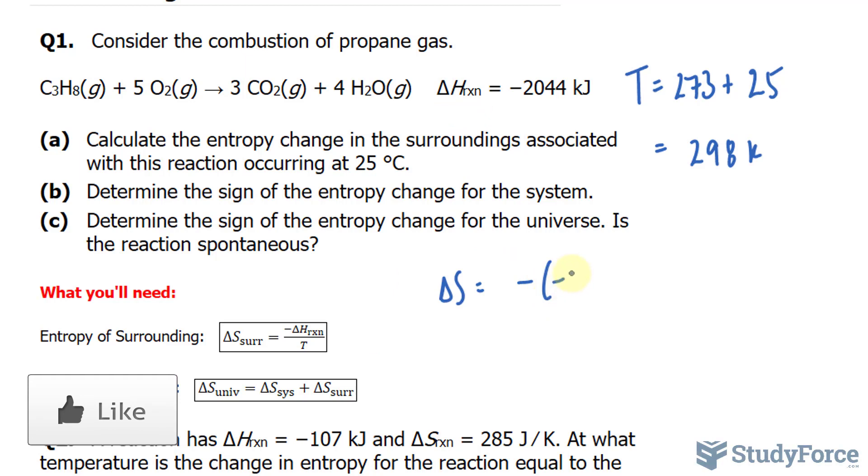So, I have negative, negative 2044, over, and I'll substitute 298 Kelvin. I'll even include the units up here, where we have kilojoules.